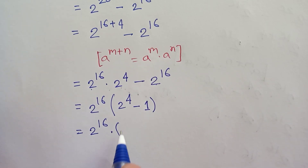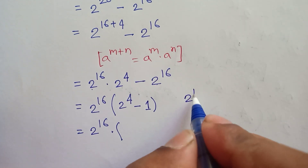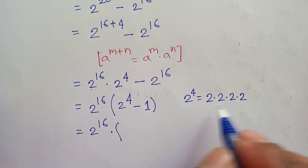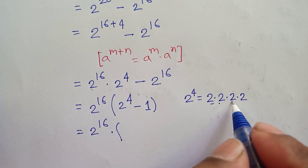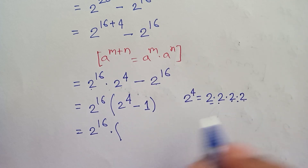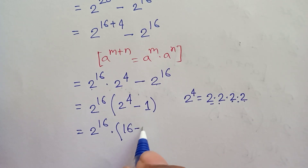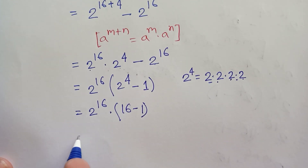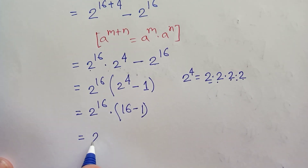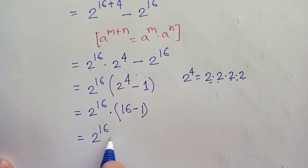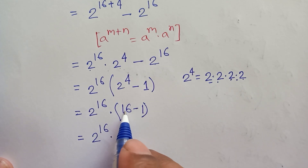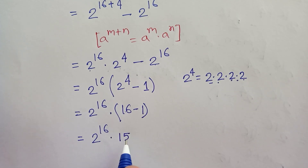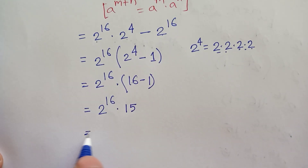Now 2^4 equals 2 × 2 × 2 × 2: 2×2 is 4, 4×2 is 8, 8×2 is 16. So we have 2^16 times (16 minus 1), which equals 2^16 times 15.